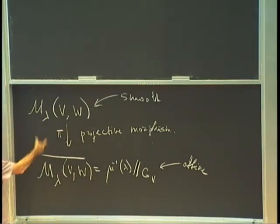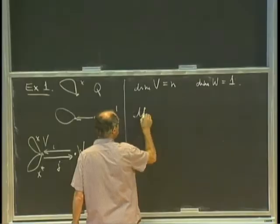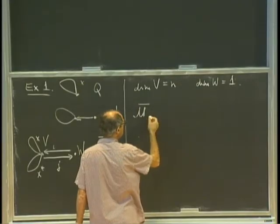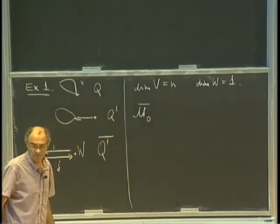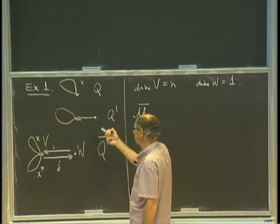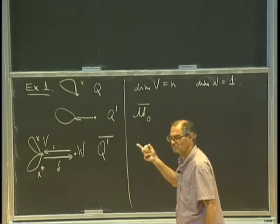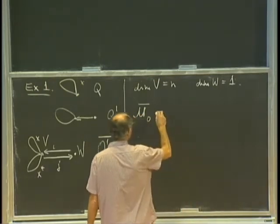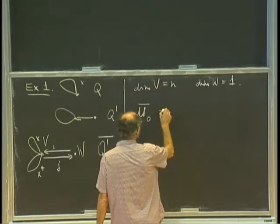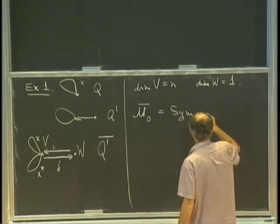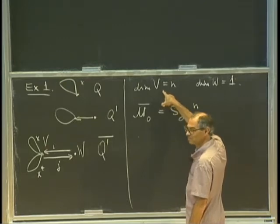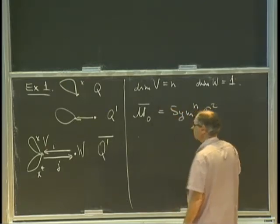In all these examples it's useful to look at both M and M bar. So first: what is M bar in the Jordan quiver case? I'll take parameter zero for now — in our case, the parameter is just one complex number, and the only thing that matters is whether it's zero or non-zero; otherwise the varieties are isomorphic, so let's discuss only the zero case. The claim is that M bar zero equals the N-th symmetric power of C², where N is the dimension of V.